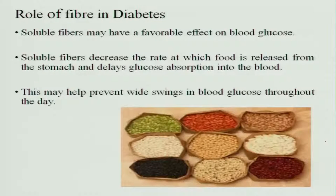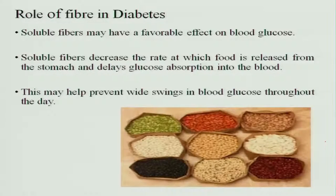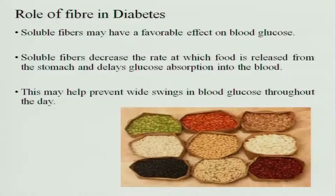Regarding the role of fiber in diabetes: soluble fibers may have a favorable effect on blood glucose levels. When soluble fibers absorb water and form a gel, they decrease the rate at which glucose from food is released into the stomach, causing a delay in glucose absorption into the blood. This helps prevent wide swings of blood glucose throughout the day.